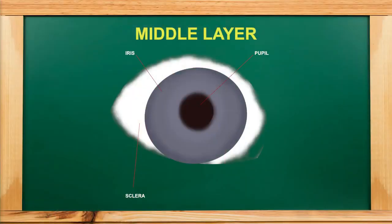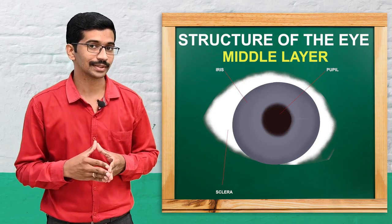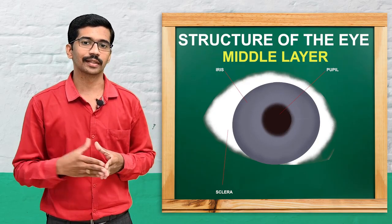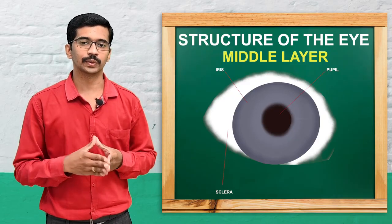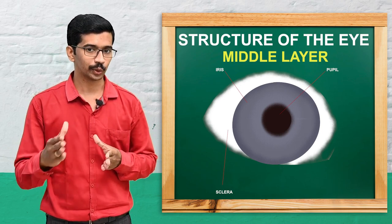The anterior part of the choroid is the ciliary body. It is an anterior continuation of the choroid and contains the ciliary muscles, to which the suspensory ligament of the lens is attached. Specialized epithelial cells in the ciliary body secrete a fluid called aqueous humor, which goes into the anterior chamber of the eyeball.